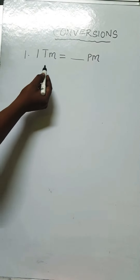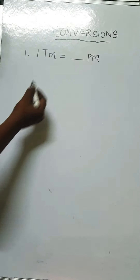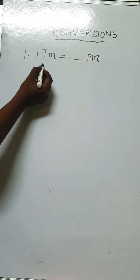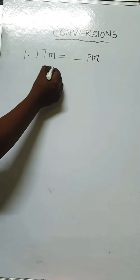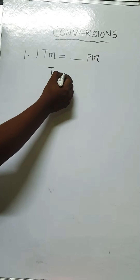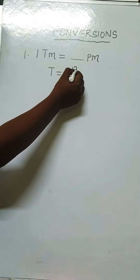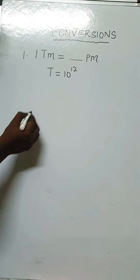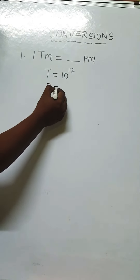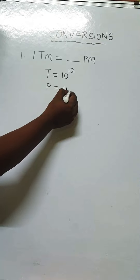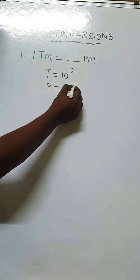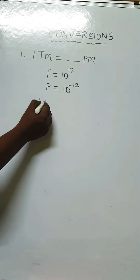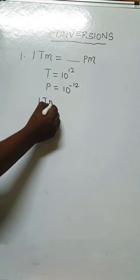The question is: one terameter is equal to how many picometers? You should know that tera is a multiple of 10, which is equal to 10 power 12. Pico is a submultiple of 10, which is equal to 10 power minus 12. So what we have to do is write the question: one terameter is equal to...